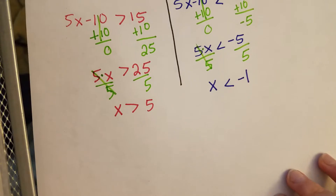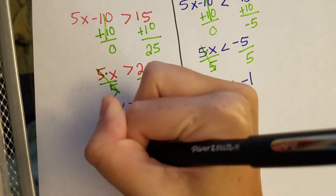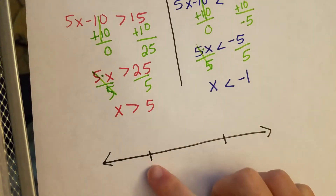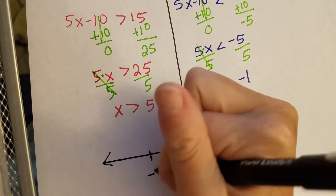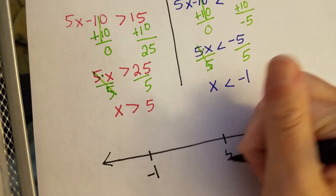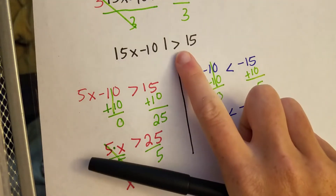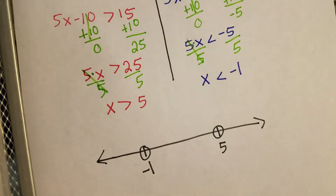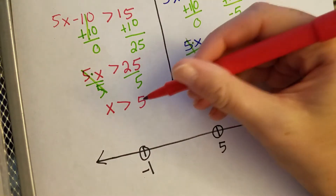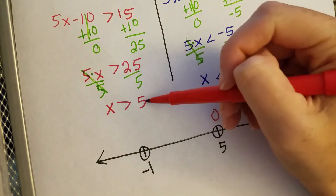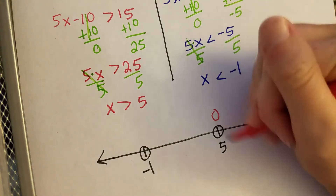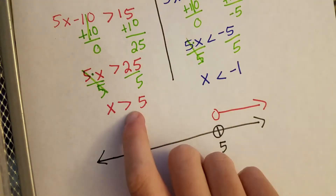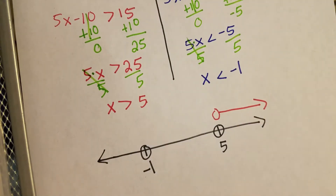Now we put these inequalities on a number line and determine if the final answer is an 'and' or an 'or.' We write the smaller number — negative 1 — on the left, and the larger number — 5 — on the right. Since we have strict inequalities, our bubbles will be open. For the first inequality, X is greater than 5, so we start at 5 and the arrow heads to the right — the numbers larger than 5 are on that side. The inequality points to the right since X is on the left-hand side.